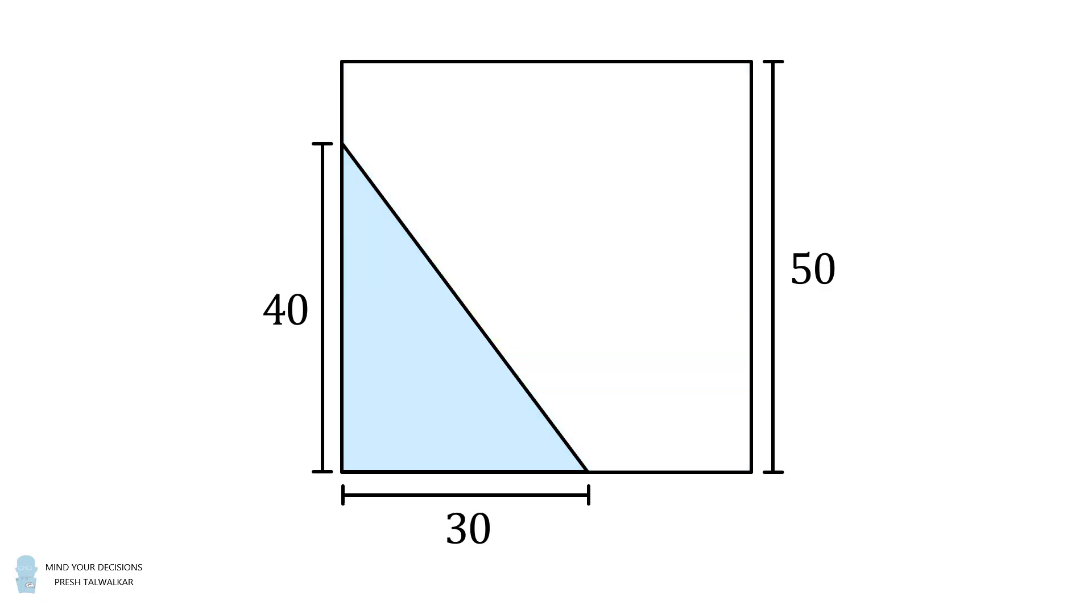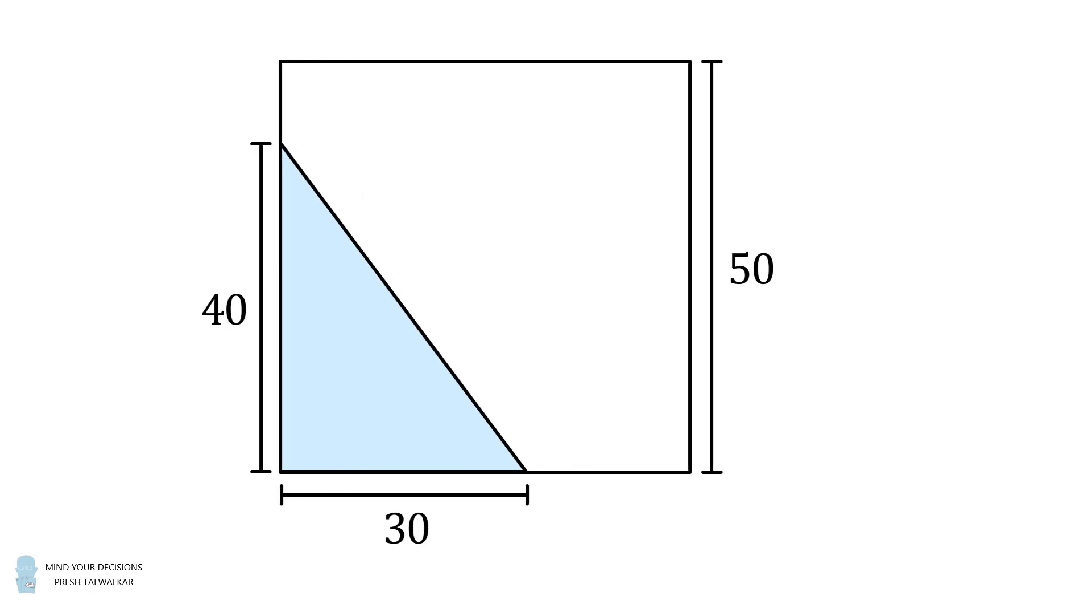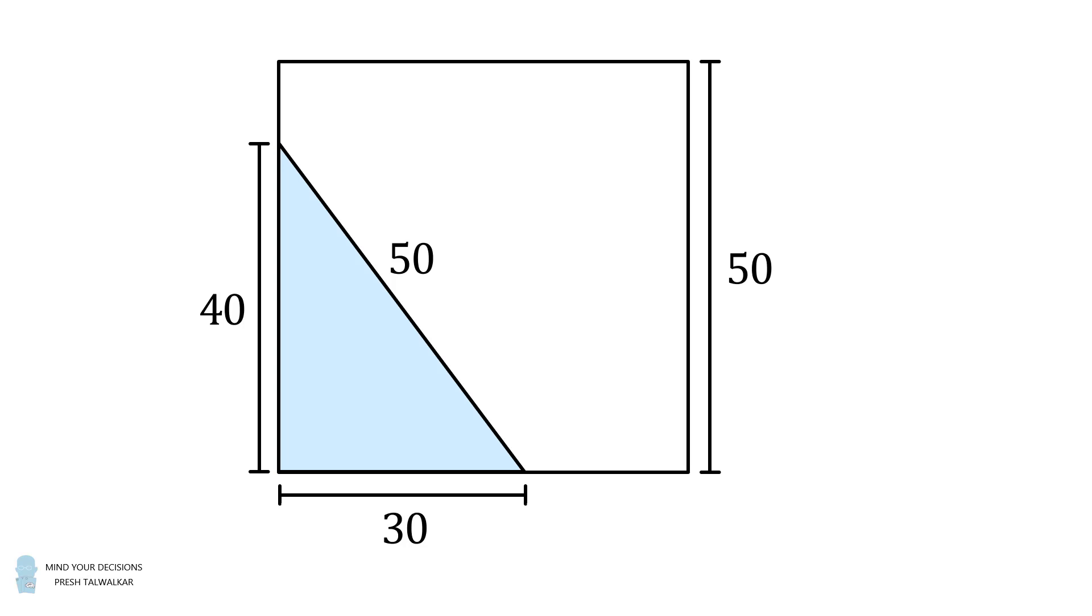Since its legs are equal to 30 and 40, its hypotenuse will be equal to 50 because it's a 3-4-5 right triangle scaled up by 10. Now suppose this triangle has angles that are equal to a and b. In the adjacent corner, this triangle will also have angles equal to a and b, but it'll be rotated by 90 degrees. So a will be here and b will be over there.